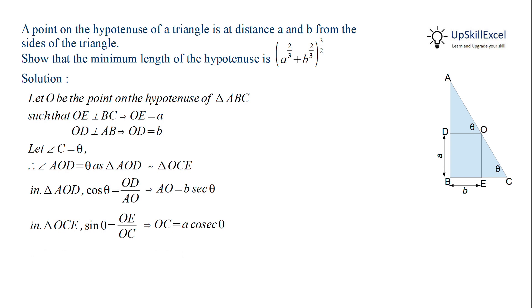The length of the hypotenuse is equal to AC, which is equal to AO plus OC. We have obtained AO and OC earlier. Substituting them, we get that the hypotenuse H is equal to B sec theta plus A cosec theta.